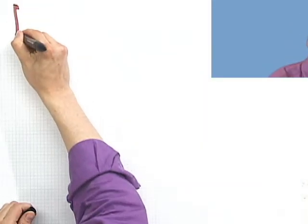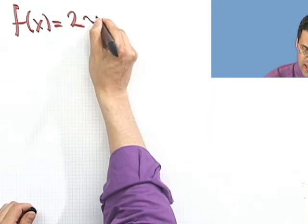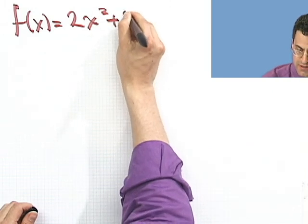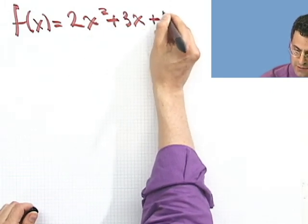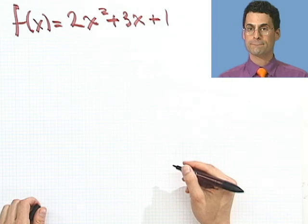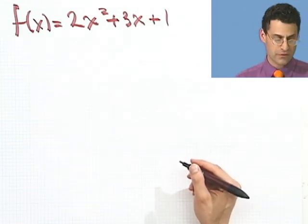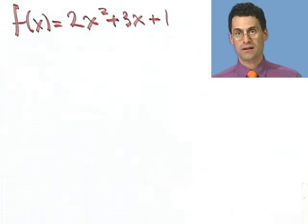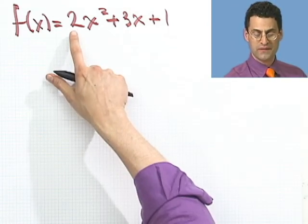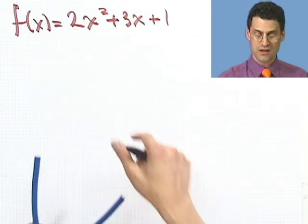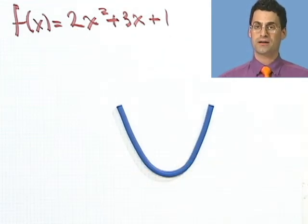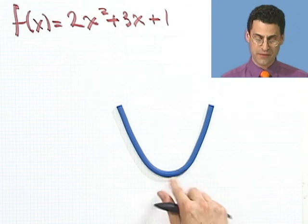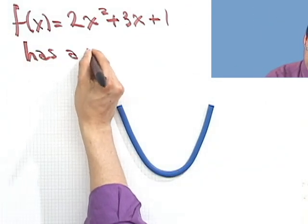Let me try a couple of examples to really illustrate this point. Suppose we're given f(x) = 2x² + 3x + 1. Now what I want to do is first determine: does this have a maximum or a minimum? Is this a happy face parabola or a sad face? Well, this is a positive coefficient, so it's going to be a happy face parabola. If it's a happy face parabola, it will have a minimum. So this has a minimum.